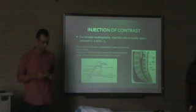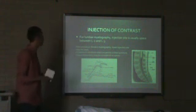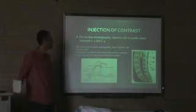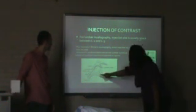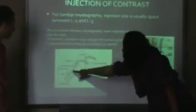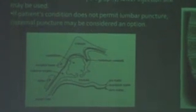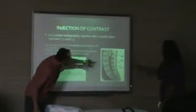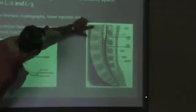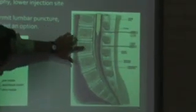Injection of contrast is done between L2 and L3. For cervical and thoracic myelography, lower injection sites may be used, but if there are any complications, a cisterna puncture may be considered as an option — the needle is located between the atlas and the occipital bone. This shows L1, L2, and L3; the needle goes in between L2 and L3. The subarachnoid space extends all the way down, so there is no danger of hitting the spinal cord as there is at the L1-L2 level.